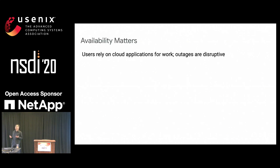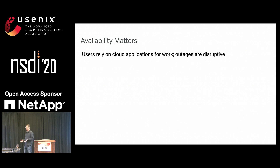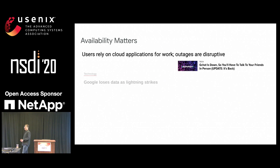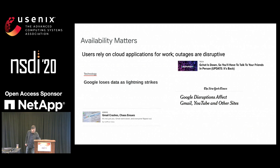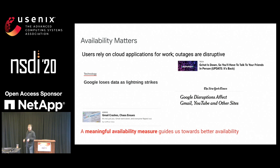Availability really, really matters for us. Our users use our applications to get their work done. And when our systems are down, they can't get their work done. And when things are really bad, their inability to get work done shows up on the front page of the New York Times, which we really don't like. So we spend a lot of our energy and time trying to improve the availability of our system.